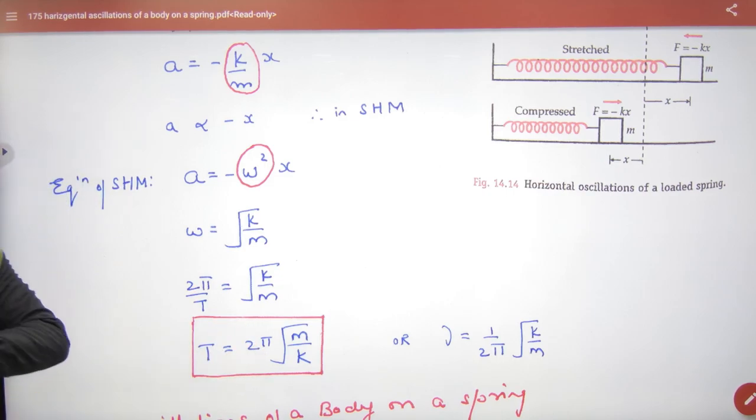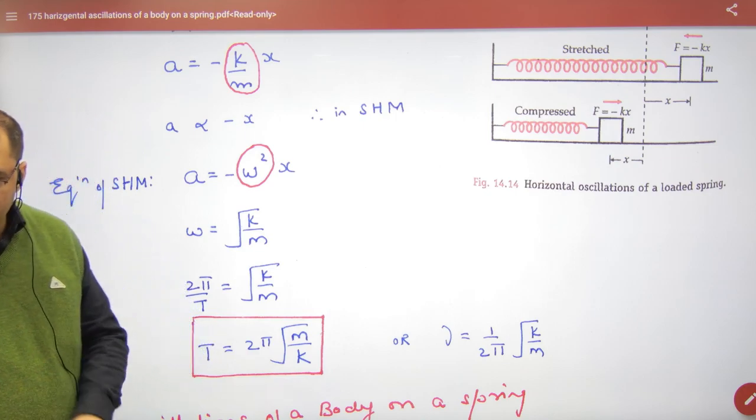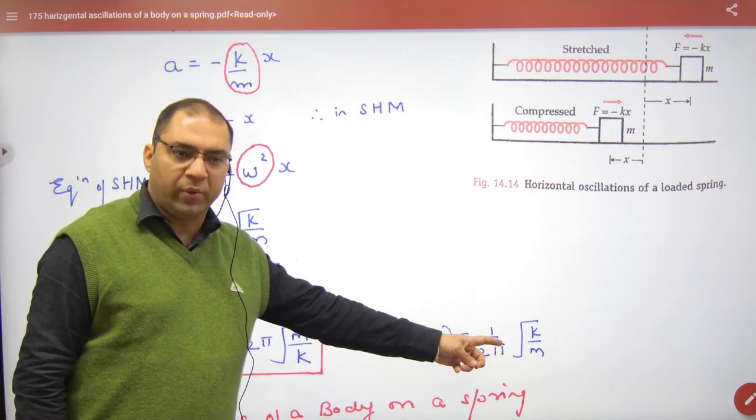Spring mass system. Horizontal system. When the spring mass system moves, time period formula: T = 2π√(m/k). And time period reciprocal is frequency.